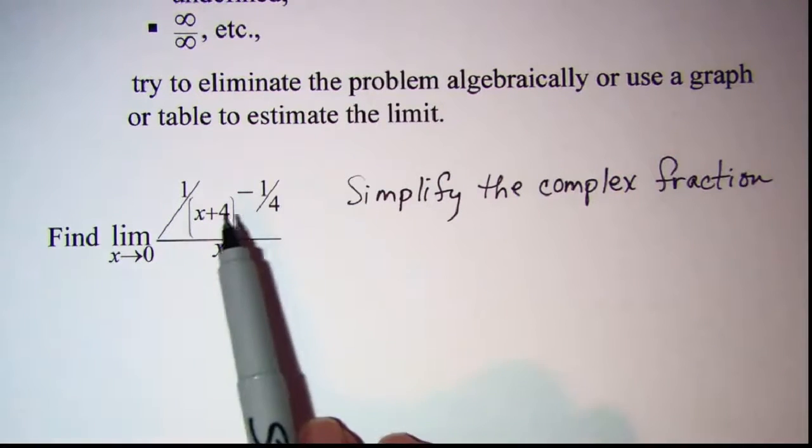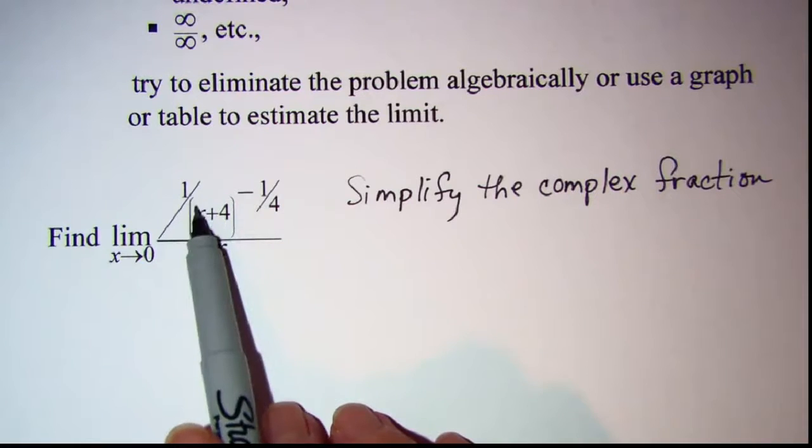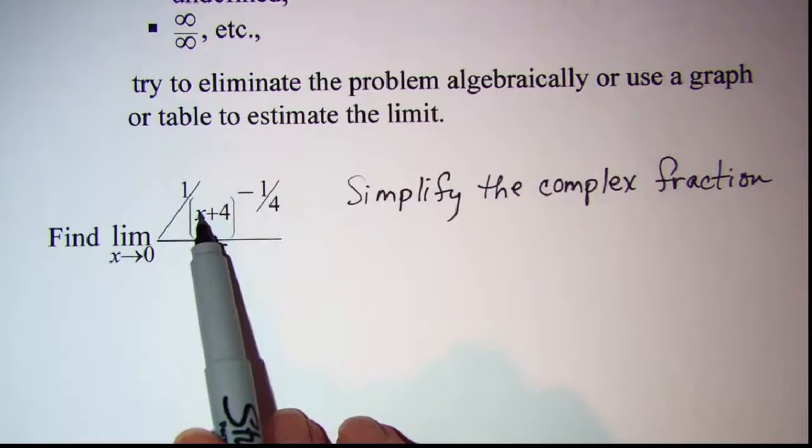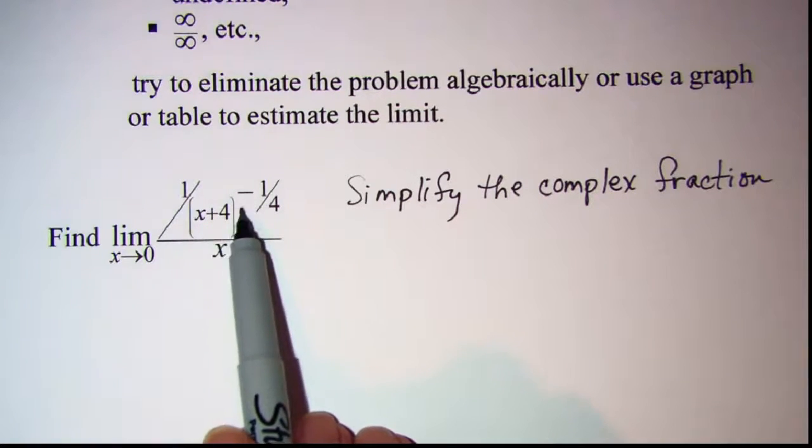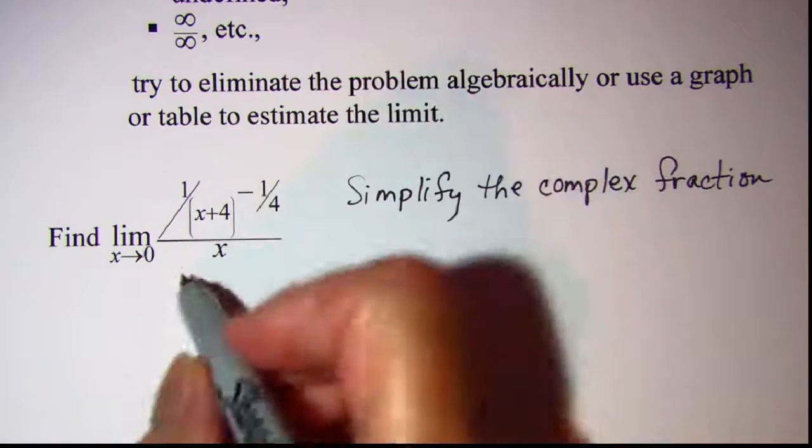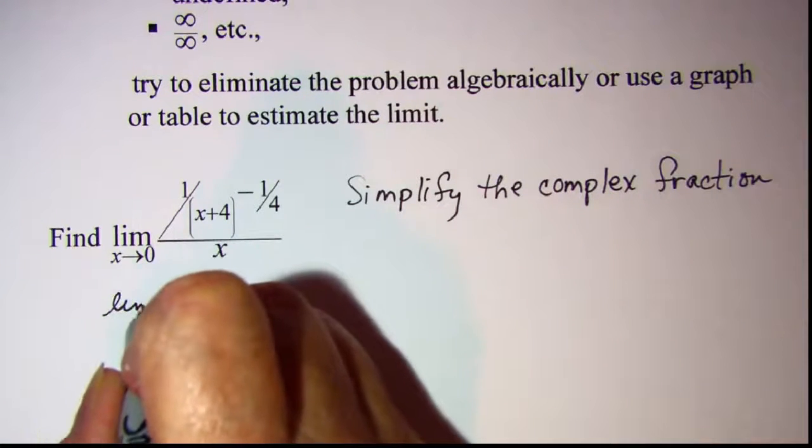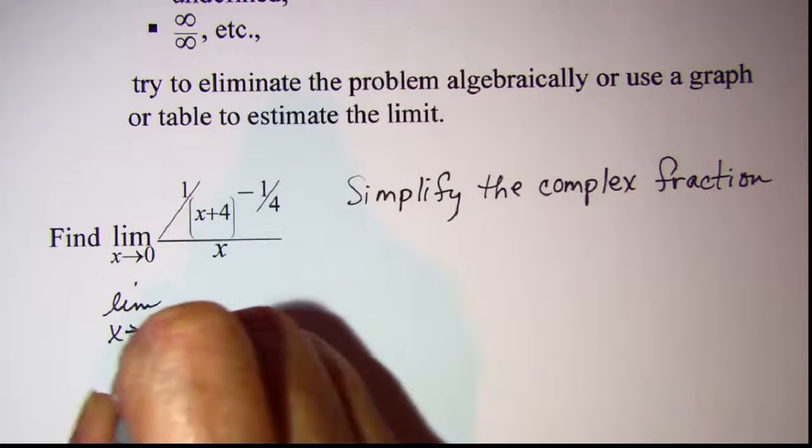So I have two fractions that are subtracted in the numerator. I'm going to get a common denominator between those two fractions and then combine them. So this is still limit as x approaches 0.